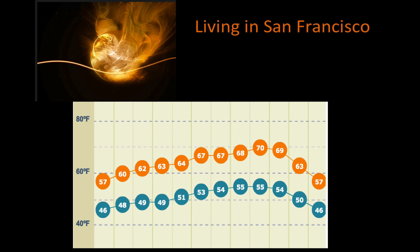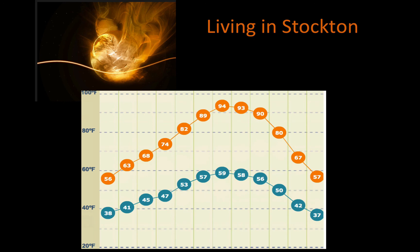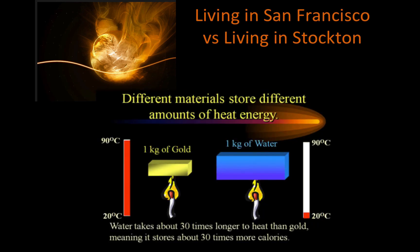Now let's look at the temperatures in Stockton. We start at 56 and go all the way up to 94 and then back to 57. There's a greater temperature change in Stockton than in San Francisco. Why is it hotter in Stockton in the summer? That's because San Francisco is by the ocean.